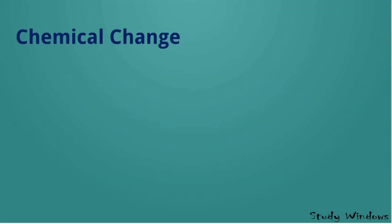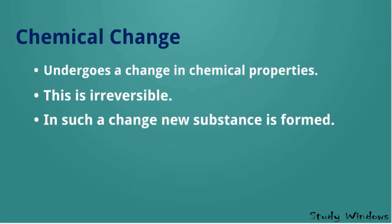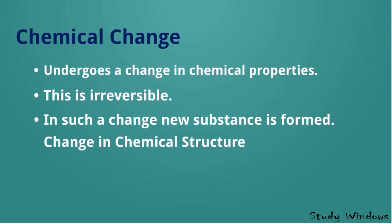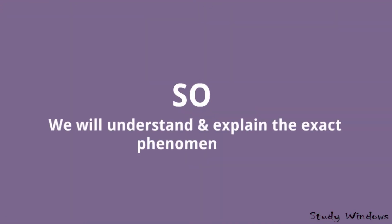Chemical change means a substance undergoes a change in its chemical properties. This is irreversible — that means we cannot get back the original substance. In such a change, a new substance is formed and the chemical structure of the substance is changed. Let's take some examples for better understanding.